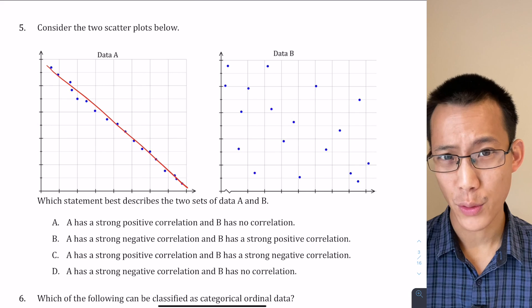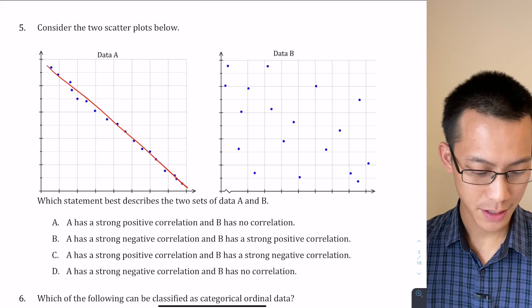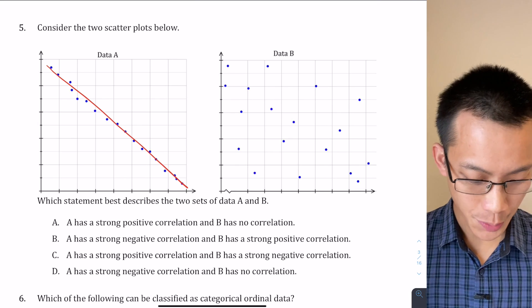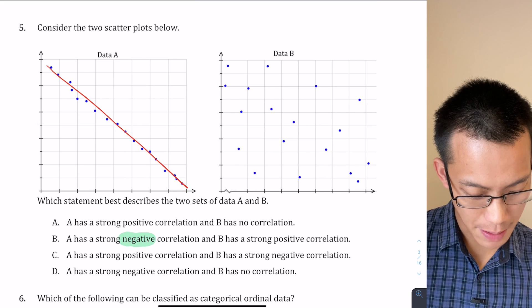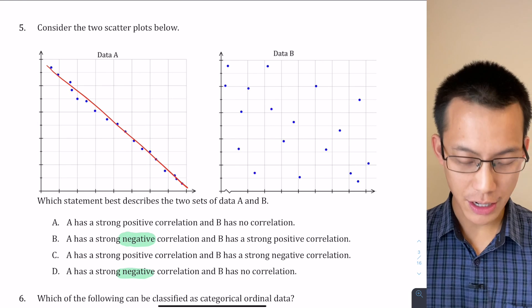The question is, is it positive or negative? Well, because the gradient of the line is going downwards, it's a negative gradient, so therefore it's a strong negative correlation. So when I look at the answers, only parts B and D say that A has a strong negative correlation, so I know it's going to be one of those.